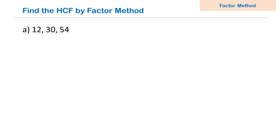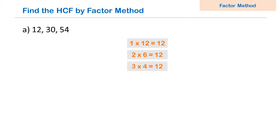12 can be written as 1 multiplied by 12 equals 12. Is 12 completely divisible by 2? Yes, so 2 multiplied by 6 equals 12. Is 12 completely divisible by 3? Yes, so 3 multiplied by 4 equals 12. Then we move on to 4, which is already covered. When we know we have covered all possible products of two numbers, we stop. So the factors of 12 are: 1, 2, 3, 4, 6, and 12.